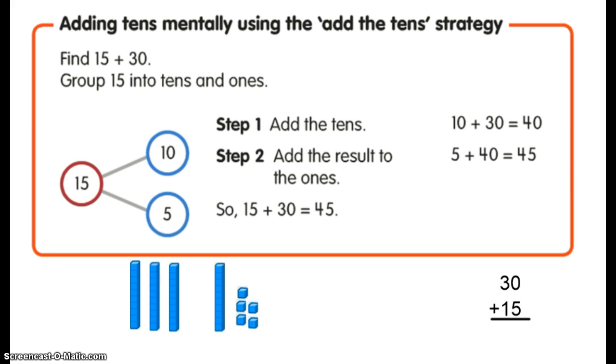So let's take a look at 15 plus 30, and the way I was taught to do this was stack them on top of each other and add them. 30 plus 15, so that's 0 ones plus 5 ones is 5 ones, and 3 tens plus 1 ten is 4 tens, so my answer is 45.